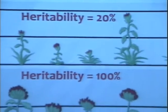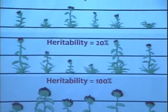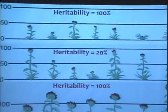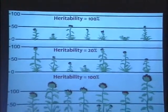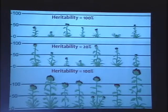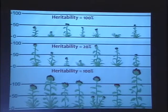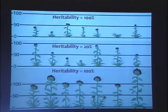So now we have the same genetic populations: one with a heritability of 20%, two with a heritability of 100%, and vastly different average sizes. Clearly, heritability has nothing to do with whether a trait is or is not genetic.